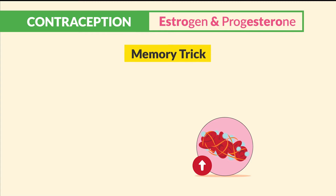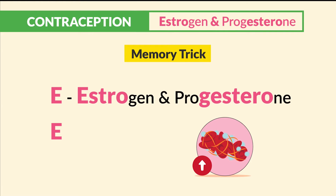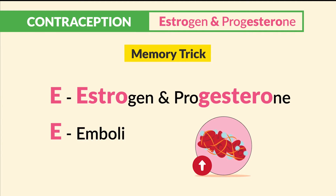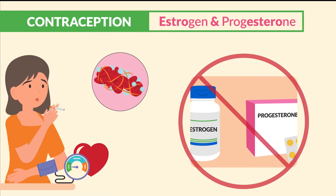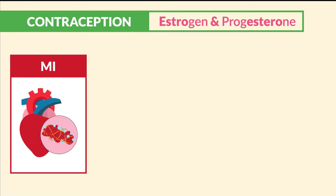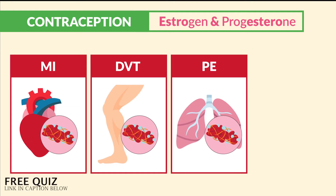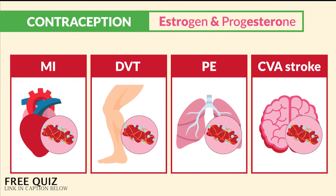So the memory trick we use is the double E's. Think estrogen and progesterone — we think E for emboli, since there's a big risk for embolic events. That's why it's not given to patients who are at high risk for clots or history of clots, like someone with an MI or heart attack, clot in the heart, or a DVT — a clot in the leg — even PE, clot in the lung, or even CVA, stroke, clot in the brain.